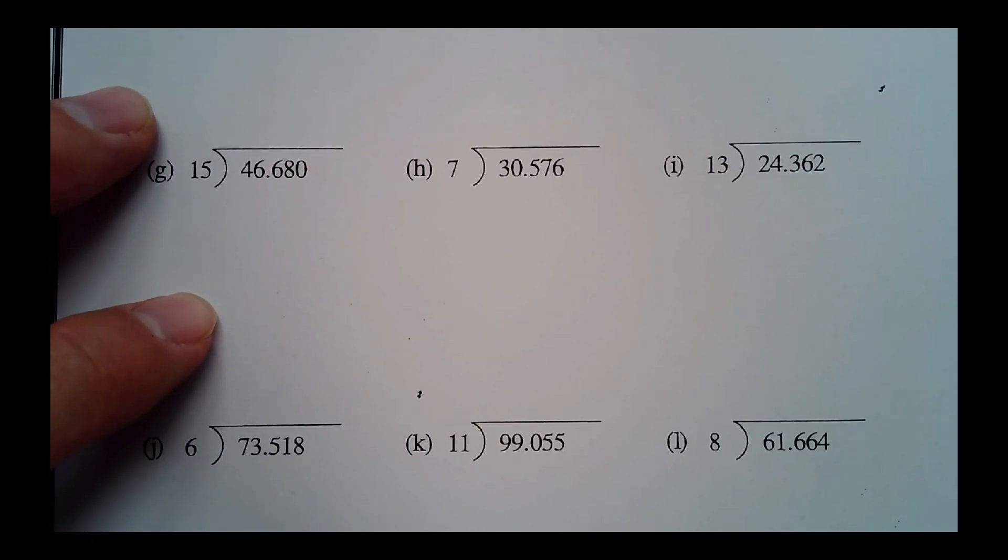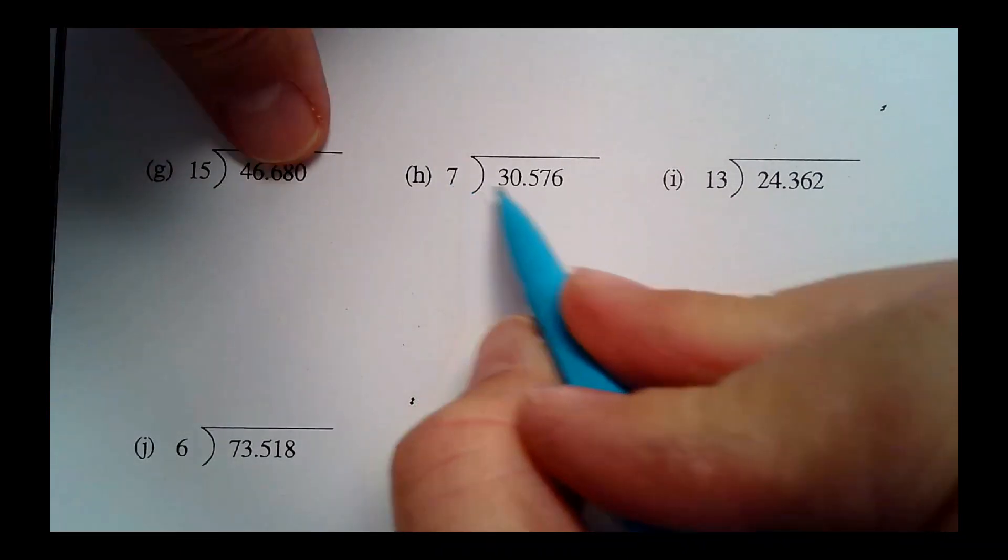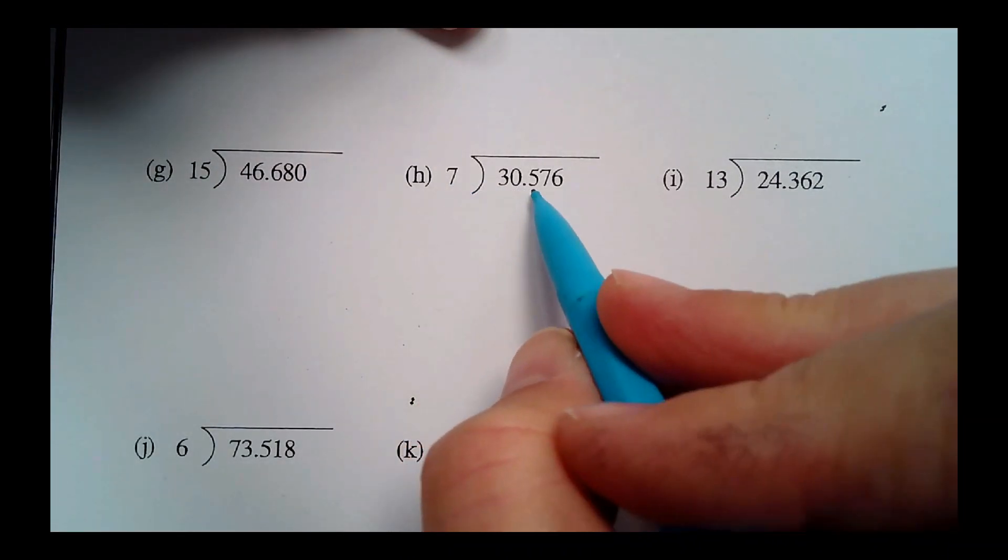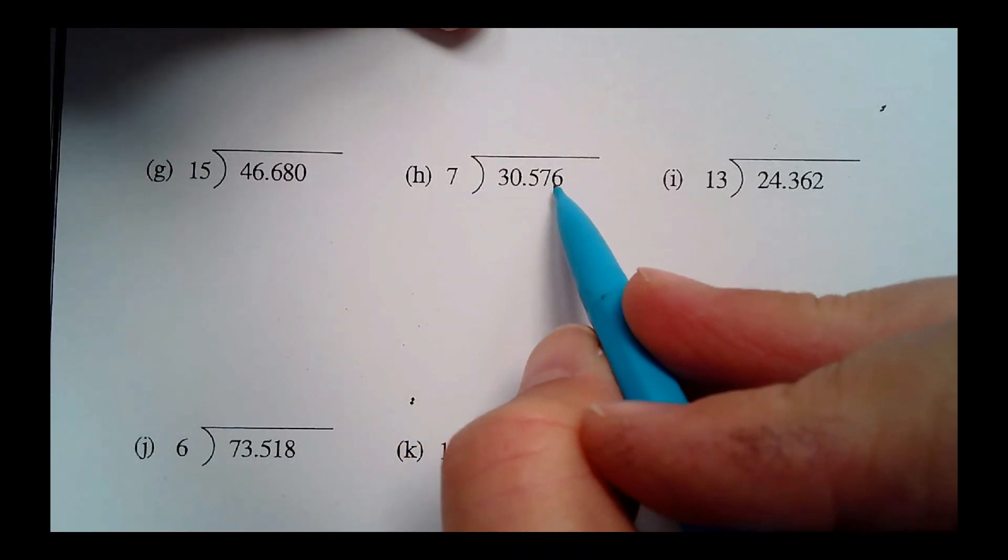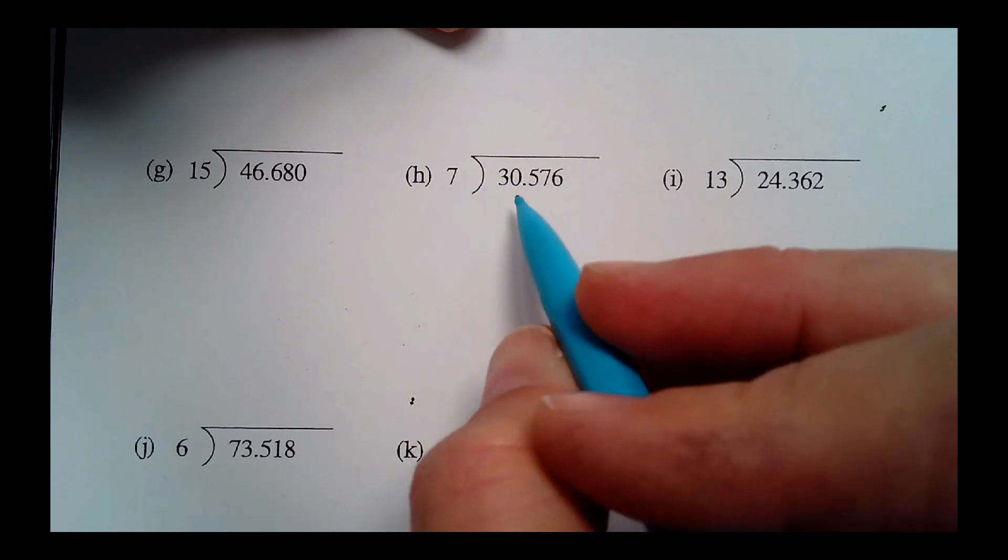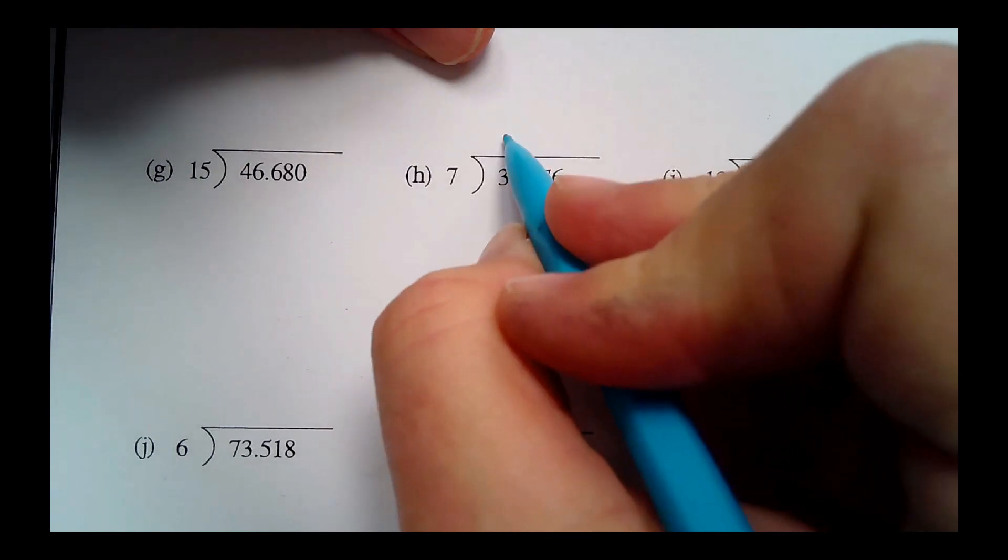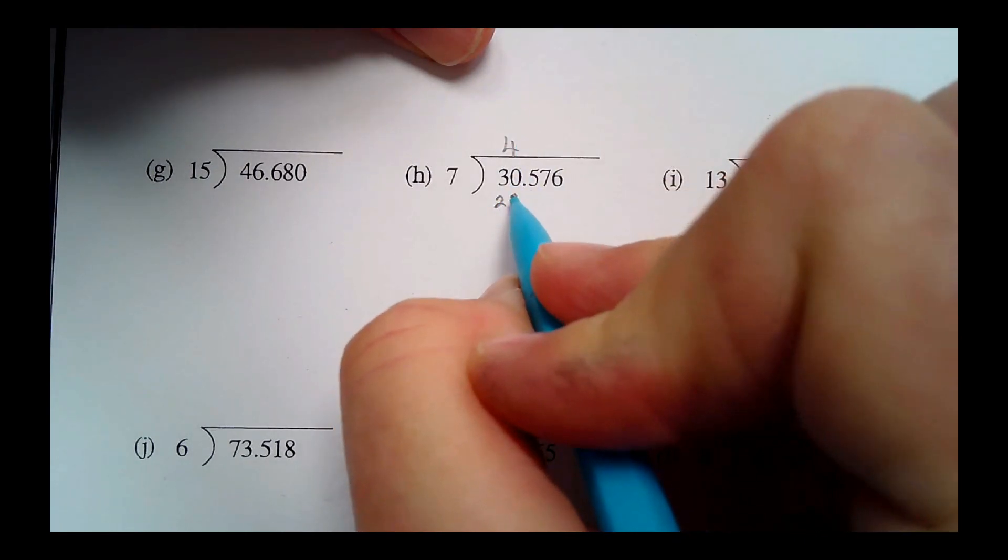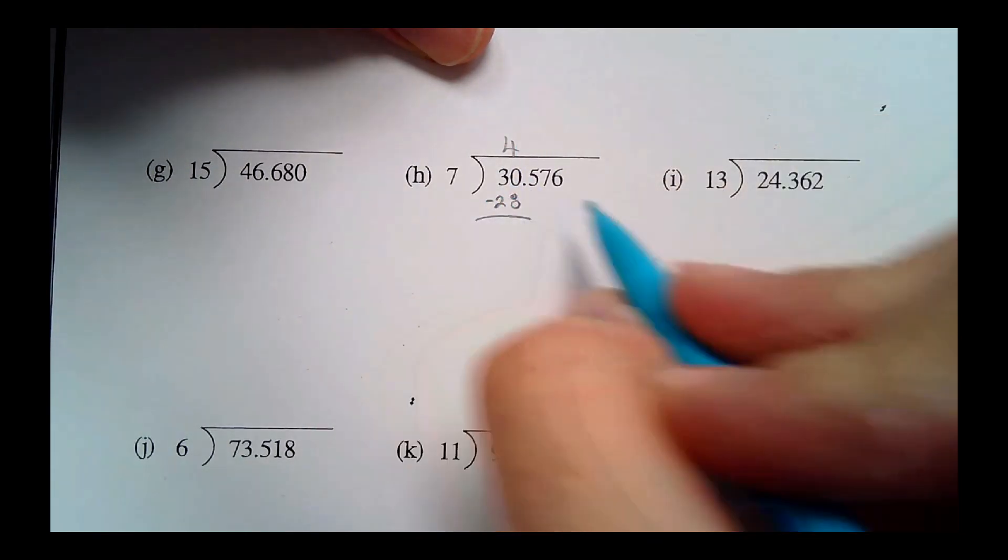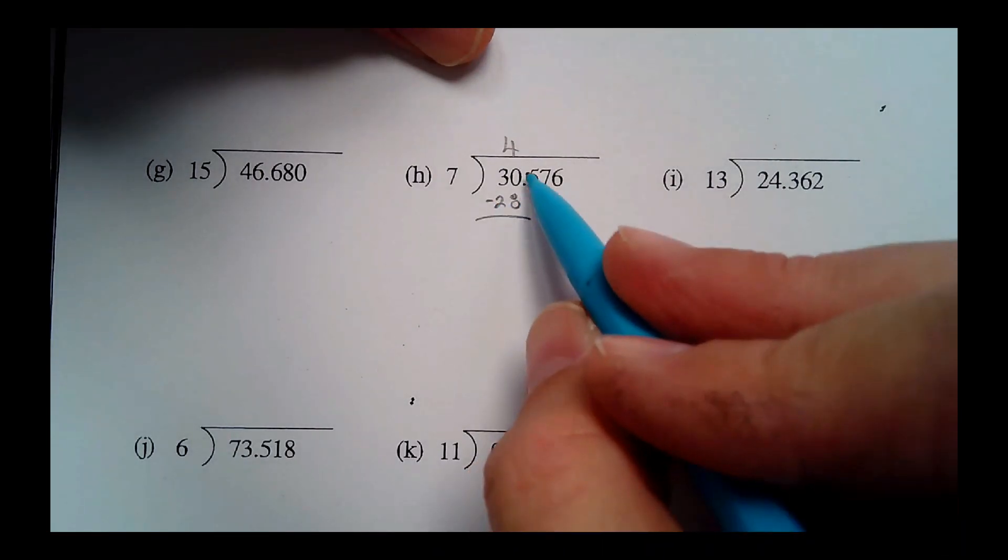What have we got here? We've got seven going into thirty point five seven six. Well, seven doesn't go into three, but it does go into thirty. How many times does it go into thirty? Well, four times seven is twenty-eight. I'm going to put down the twenty-eight. What do we do? We subtract.